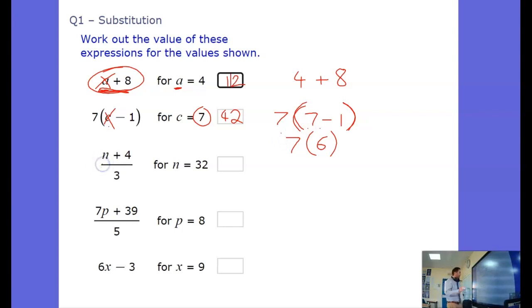Another one here. We kind of imagine some brackets here because that line, that division line is across the whole of the expression and we're going to substitute in. Again, we're going to just swap out the letter n for the number 32. So we've got 32 plus 4 divided by 3.